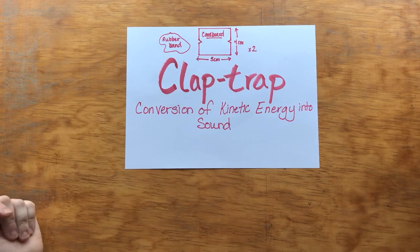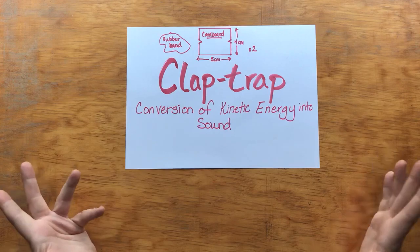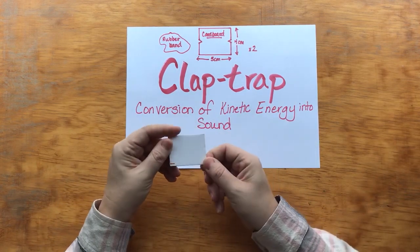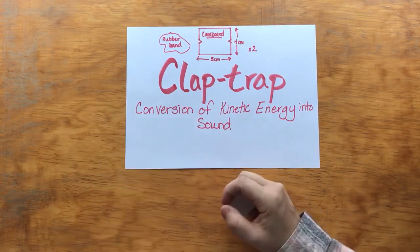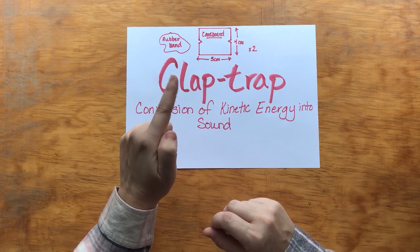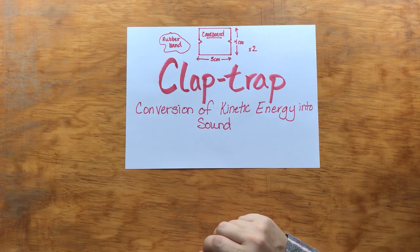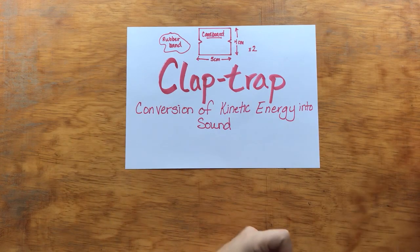Obviously scissors to do the cutting. So if your child is a bit young or your students are a bit young you may want to prepare the pieces of cardboard ahead of time and they should be four centimeters by five centimeters and that's like four inches by maybe three and a half ish inches.